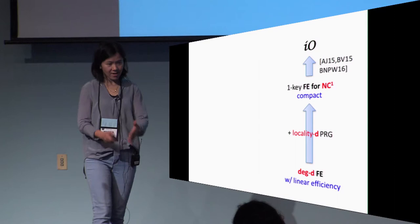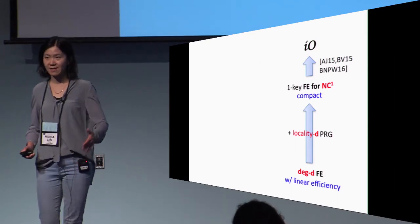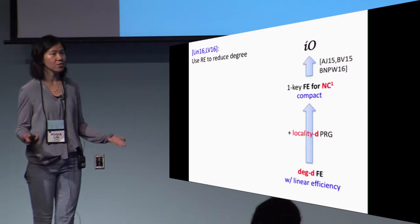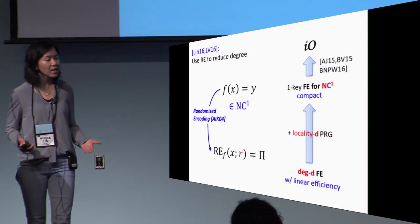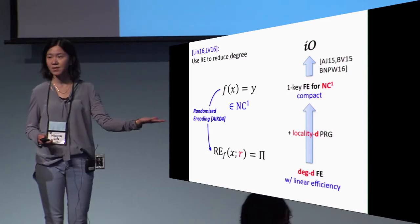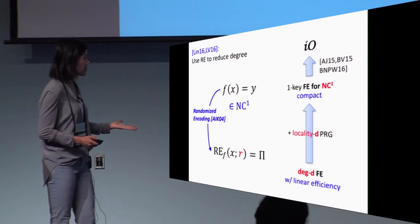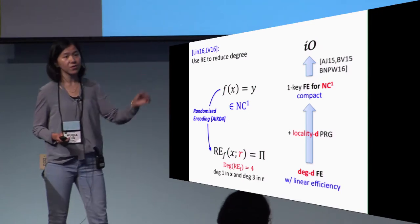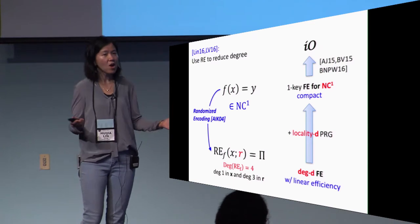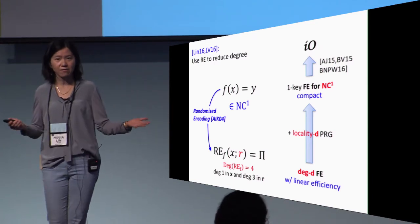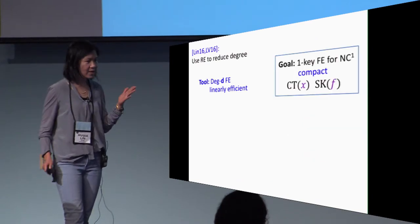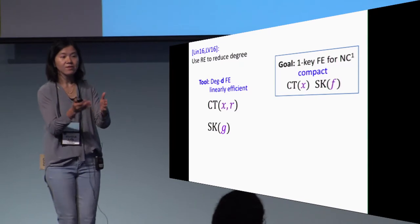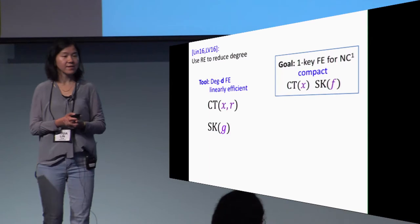So how can we do that? Let's illustrate the idea with the simple locality PRG and then later extend to blockwise locality PRG. A natural idea already appeared in previous work is to use randomized encoding to reduce degree. They enable us to take an NC1 function F and represent it as an NC0 function denoted as RE of F. A very useful fact to remember is that RE of F has very small degree, can be computed in degree four, in particular degree one in the input bits and degree three in the random bits. This is great because then hopefully we can just use the low-degree FE to compute RE of F and we'll be done. In order to encrypt a ciphertext, encrypt a message X, what we'll do is we'll take the degree D FE and encrypt it together with some randomness. Now to give a secret key for function F, we just need to give a secret key for a function G that computes the randomized encoding.